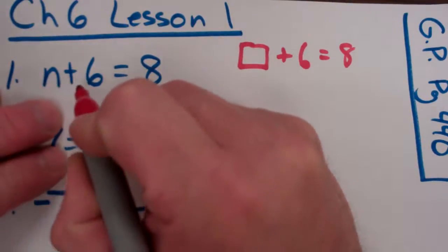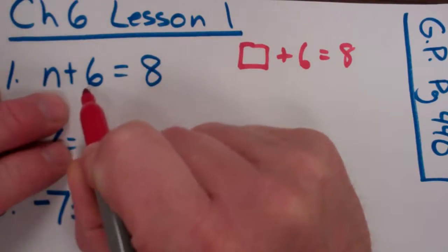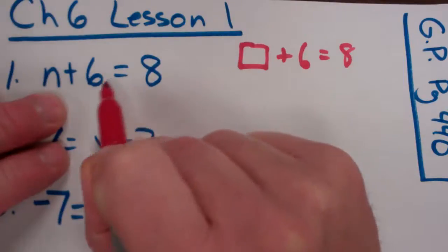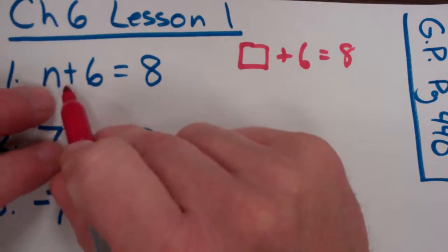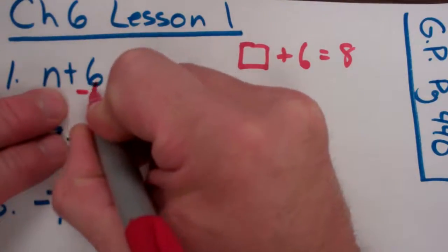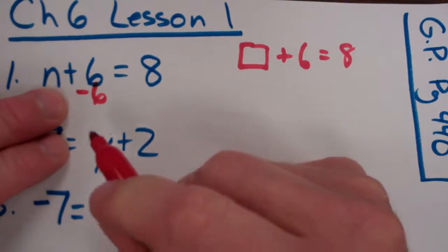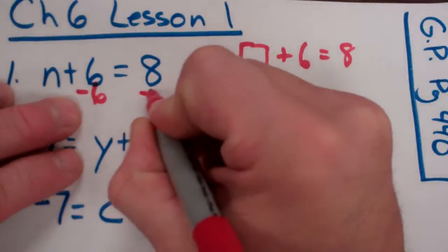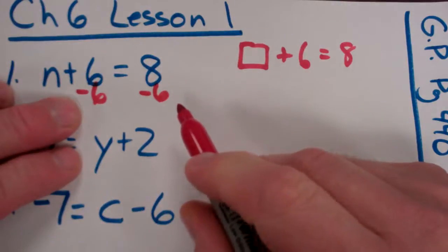Once I do that, I'm going to find the variable, and I'm going to find what was done to the variable, and I don't want to do it. Somebody already did this problem. I want to undo it. So I want to undo plus 6. I want to subtract 6. And whatever I do to one side of an equation, I need to do to the other because that keeps them balanced.